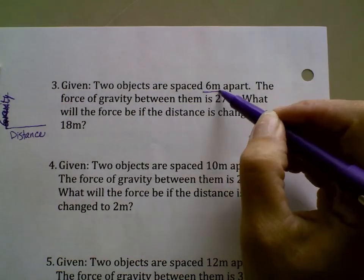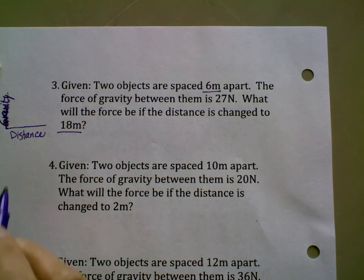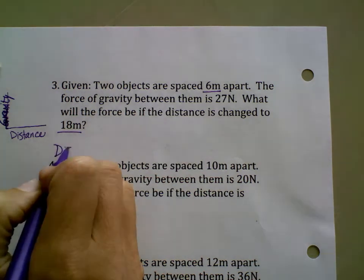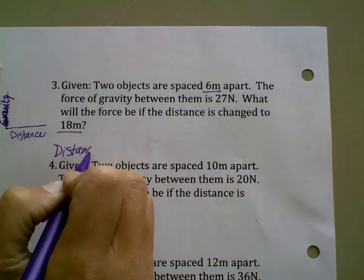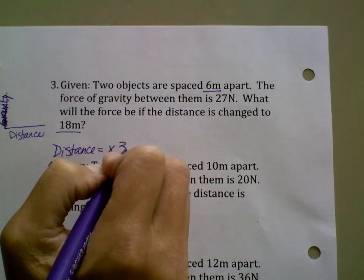So in this case we started out at 6 meters apart and we're moving to 18 meters apart. So we first have to figure out what's the relationship between those numbers, and in order to get from 6 meters to 18 meters I have to multiply that by 3.